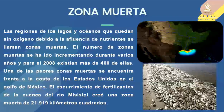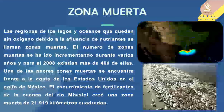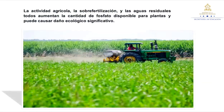Zona muerta: las regiones de los lagos y océanos que quedan sin oxígeno debido a la afluencia de nutrientes se llaman zonas muertas. El número de zonas muertas se ha ido incrementando durante varios años y para el 2008 existían más de 400 de ellas. Una de las peores zonas muertas se encuentra frente a la costa de los Estados Unidos, en el Golfo de México. El escurrimiento de fertilizantes de la cuenca del río Mississippi creó una zona muerta de 21,919 kilómetros cuadrados. La actividad agrícola, la sobrefertilización y las aguas residuales aumentan la cantidad de fosfato disponible para plantas y pueden causar daño ecológico significativo.